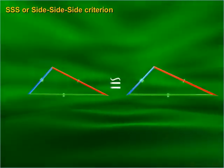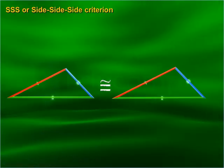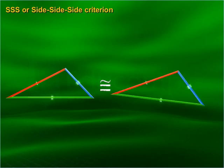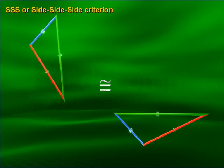SSS, or Side-Side-Side criterion: if three sides of one triangle are equal to the corresponding three sides of the other triangle, then the triangles are congruent. Triangles may remain in any position in the plane.